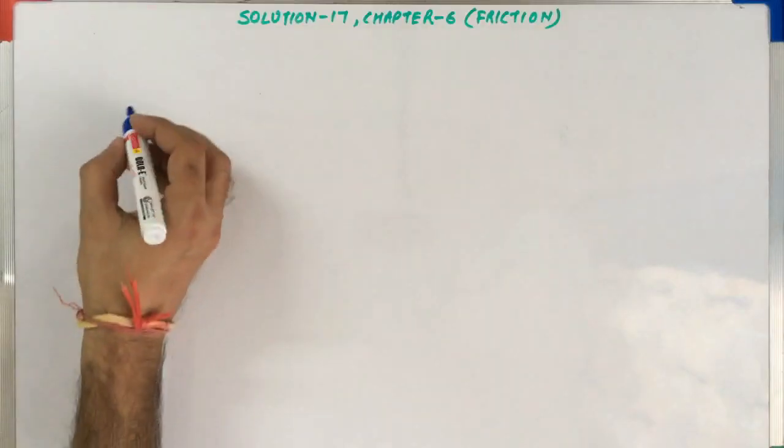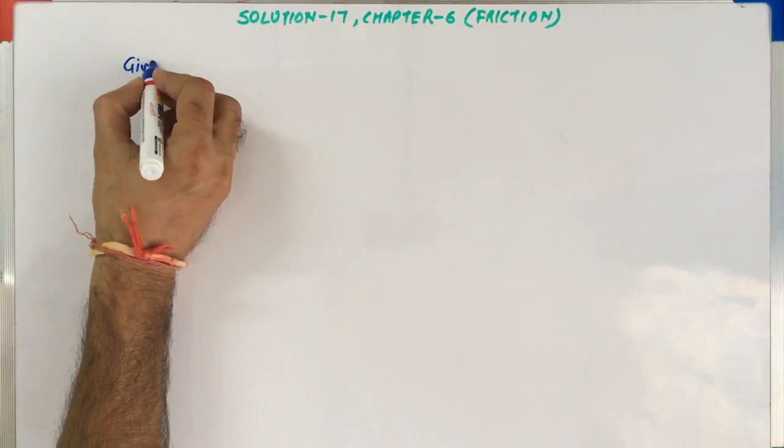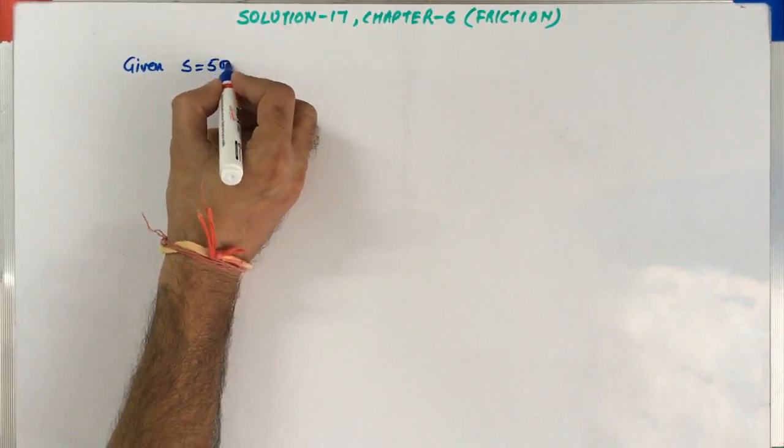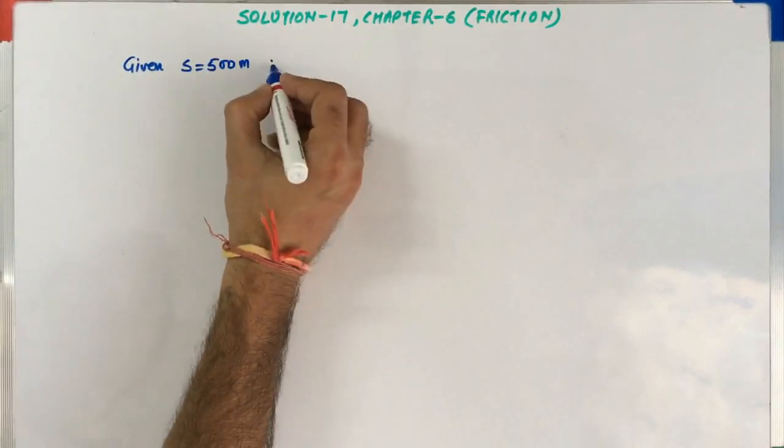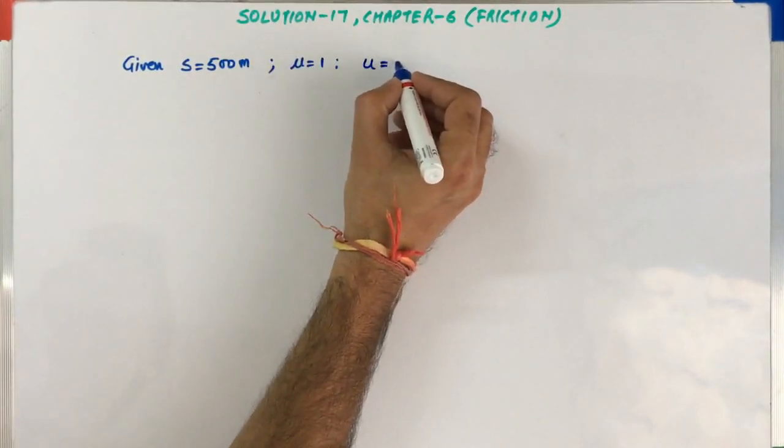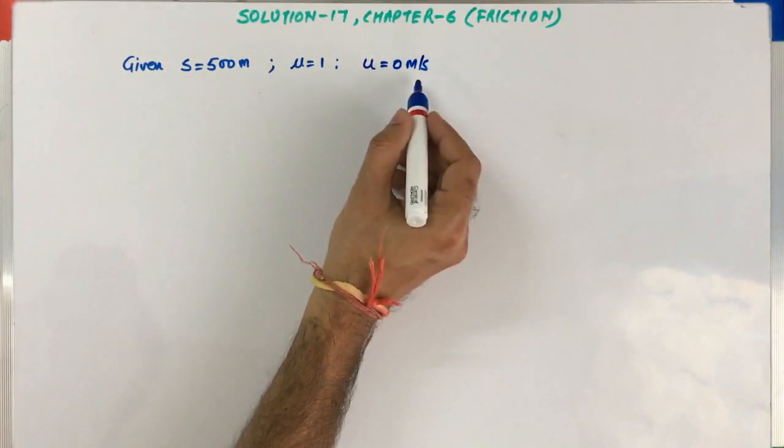So in this problem, given quantities are: the distance to be traveled is 500 meters, μ is given as 1, and the initial velocity is given as 0 meter per second because the car is starting from rest.